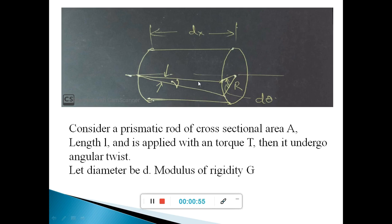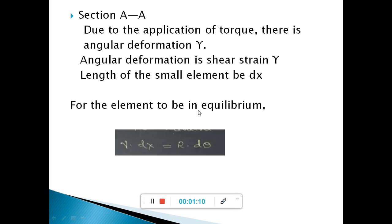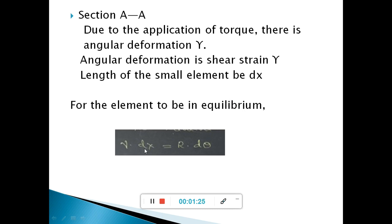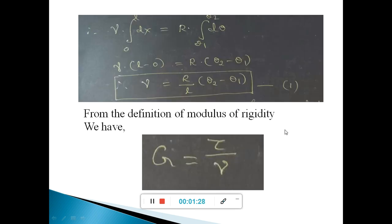Let the length of the element be dx, the deflection here is d-theta, and the radius of this element is r. The modulus of rigidity is G. For the element to be in equilibrium, we can write the shear strain equation: gamma times dx is equal to r times d-theta. The length varies from 0 to L, since we have taken the length of the bar from 0 to L.